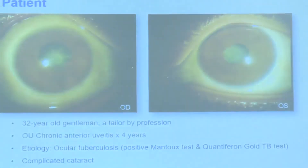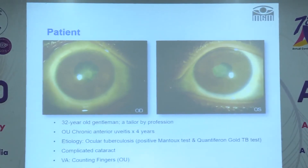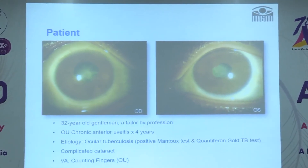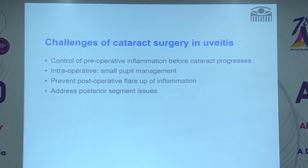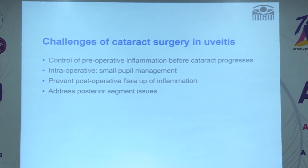This is a 32-year-old gentleman who had chronic uveitis for four years, which he diagnosed as ocular tuberculosis and treated. With the course of time he developed cataract and needed cataract surgery as his vision had significantly reduced. This is a typical patient we often encounter, and the challenges include control of preoperative inflammation before the cataract becomes significantly advanced.